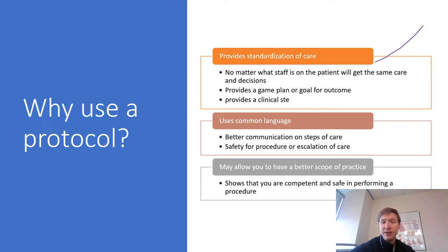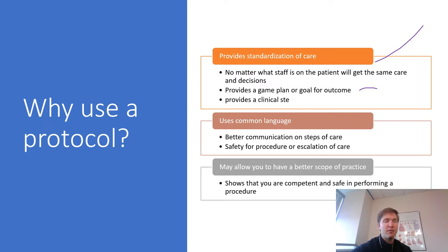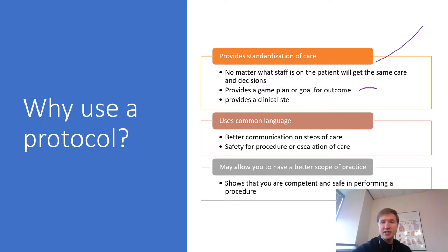Protocols provide a game plan for the outcome, especially when we have clear defined goals. When we know our goal is to get a pH in a certain range, a PaO2 in a certain range, or a specific outcome — it gives everybody a game plan. It also provides clinical steps: if the patient is still acidotic and these are the vent-setting changes we've done, these are your options for what to do next. It clarifies things and puts it in black and white, with a lot less dispute about what the next step is.